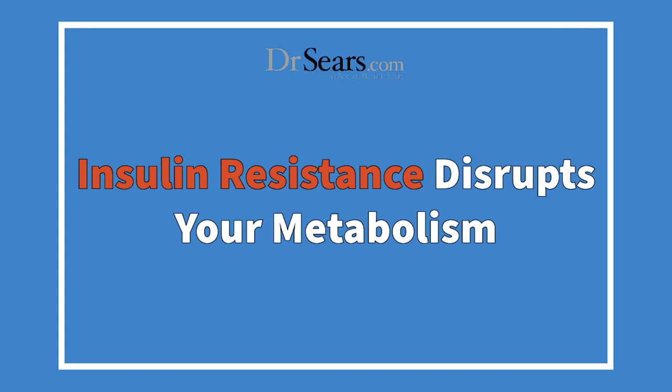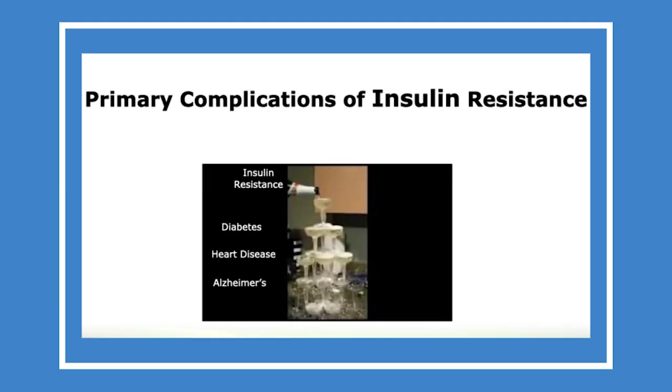What if you don't have the right diet? You develop a condition known as insulin resistance — your metabolism is simply not working very well. Think of insulin resistance like a champagne fountain at a wedding. As you build up insulin resistance, it eventually spills over into the next tier of chronic disease: diabetes. Once you have diabetes, you are four times more likely to develop heart disease and twice as likely to develop Alzheimer's. That's why many neurologists call Alzheimer's diabetes type 3.